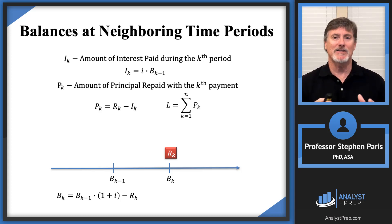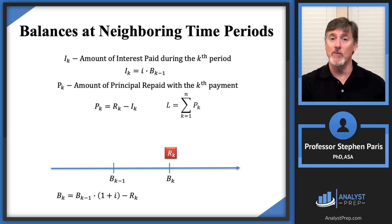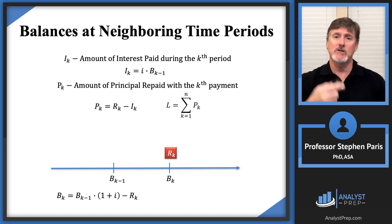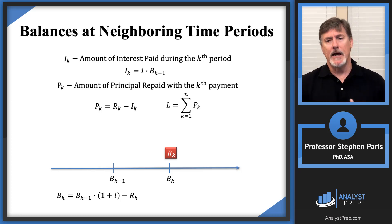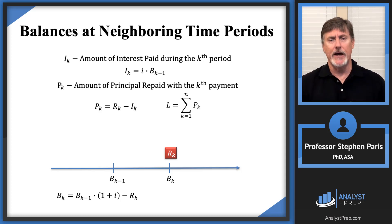So this is one way to relate balances at neighboring time values. The balance at time K equals the balance at time K minus one accumulated — that is, multiplied by (1+i) — and then we subtract off the amount that we pay. That gives us the balance at time K.